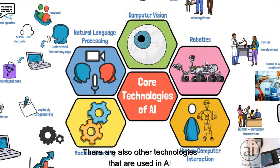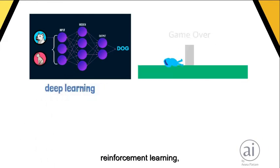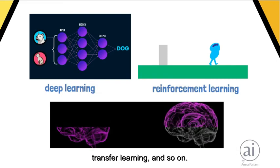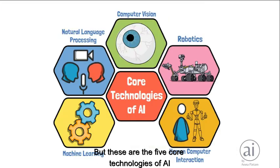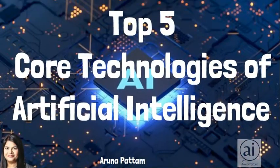There are also other technologies that are used in AI such as deep learning, reinforcement learning, transfer learning and so on. But these are the five core technologies of AI that you should definitely know about. I hope you found this useful. Thanks for watching.